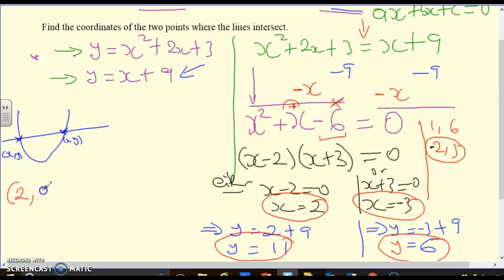So, we have 2 comma 11 and negative 3 comma 6. Now, I need to make a note here because not all questions ask you to write them in the form of a coordinate. If you haven't been asked to do that I would advise you not to put them in a coordinate format.